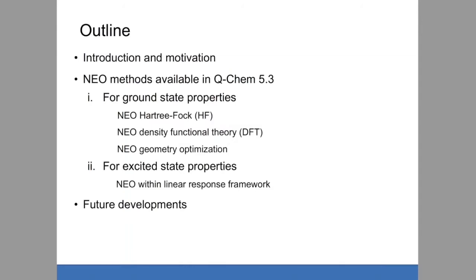I will first give an introduction to NEO methods and the motivation behind NEO. I will go through and introduce each method we put in Q-Chem 5.3. For ground state properties, I will talk about NEO Hartree-Fock, NEO-DFT, and NEO geometry optimization. I will then talk about excited state properties that NEO can give, using NEO-TDDFT as an example. Last but not least, I will finish with a list of future developments of NEO methods for future versions of Q-Chem.